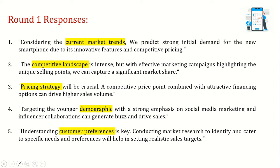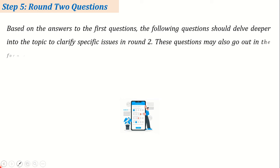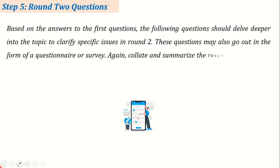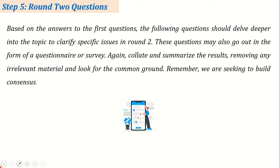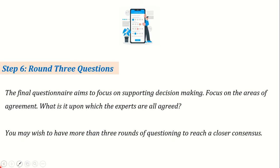Based on the answers to the first round, subsequent questions in round two delve deeper into the topic to clarify specific issues. These questions may also go out in the form of a questionnaire or survey. Again, collate and summarize the results, removing irrelevant material and looking for common ground. Round three is usually the final round, but you can have any number of rounds greater than two to build consensus. Here are the final responses from rounds two and three.